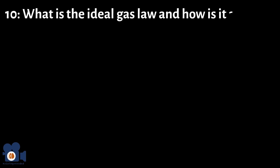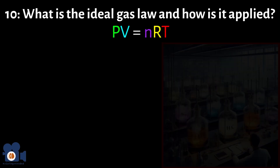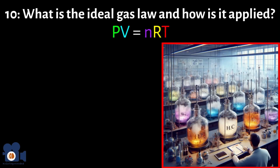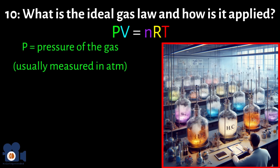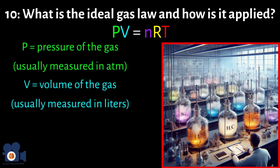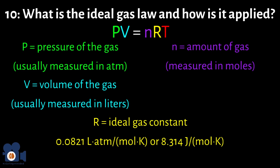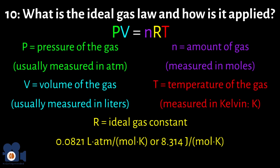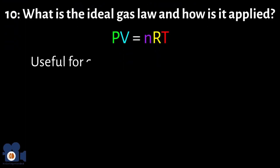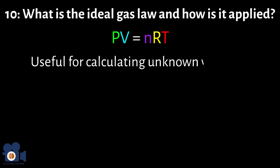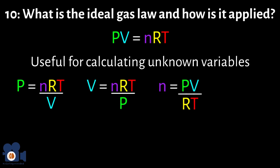Number 10: What is the ideal gas law and how is it applied? The ideal gas law, represented by the equation PV equals NRT, accurately describes the behavior of many common gases under typical conditions. It connects the pressure P, volume V, amount of substance N, and temperature in a gas. This formula is particularly useful for calculating any unknown variable when the other three are known, simply by rearranging the equation.